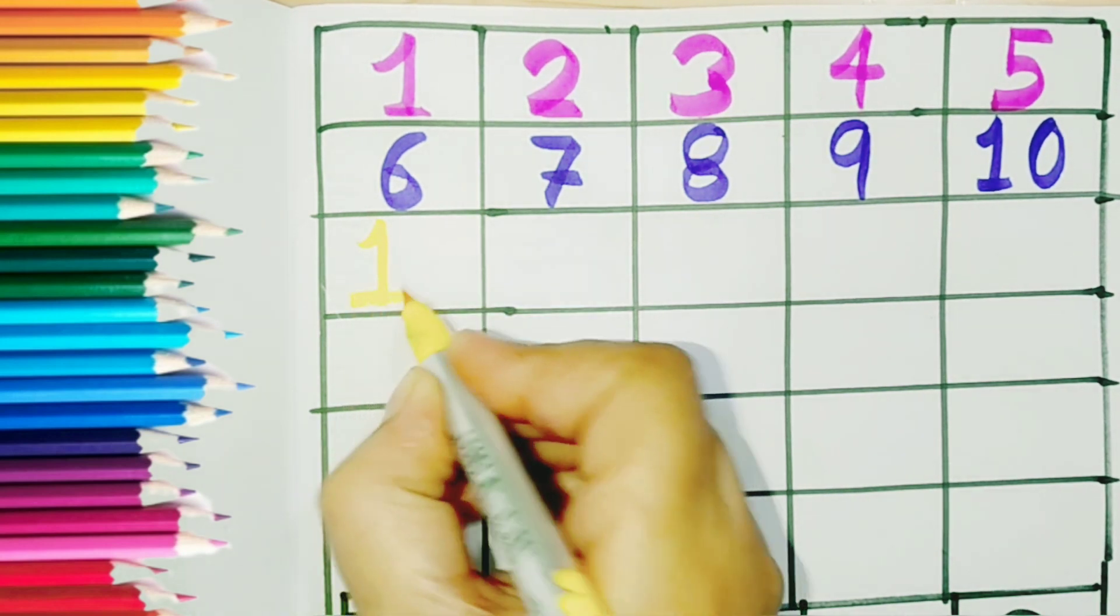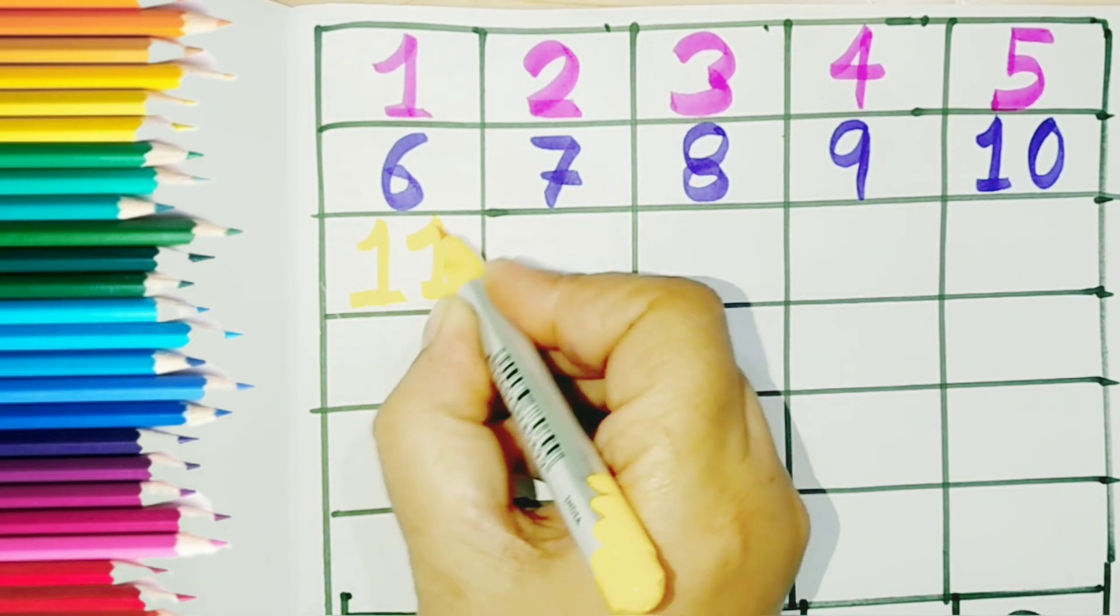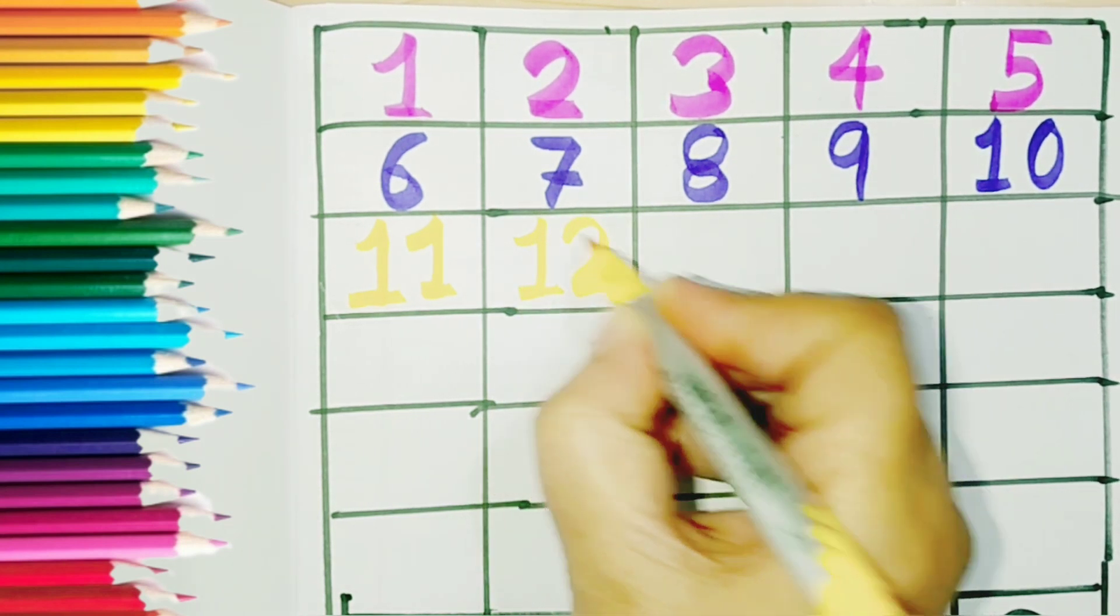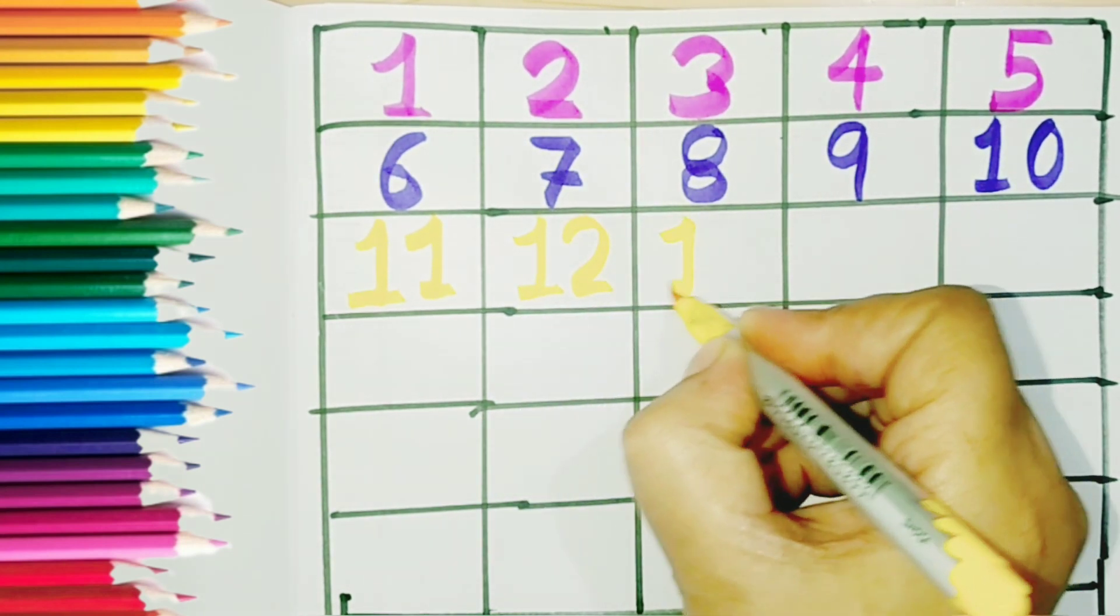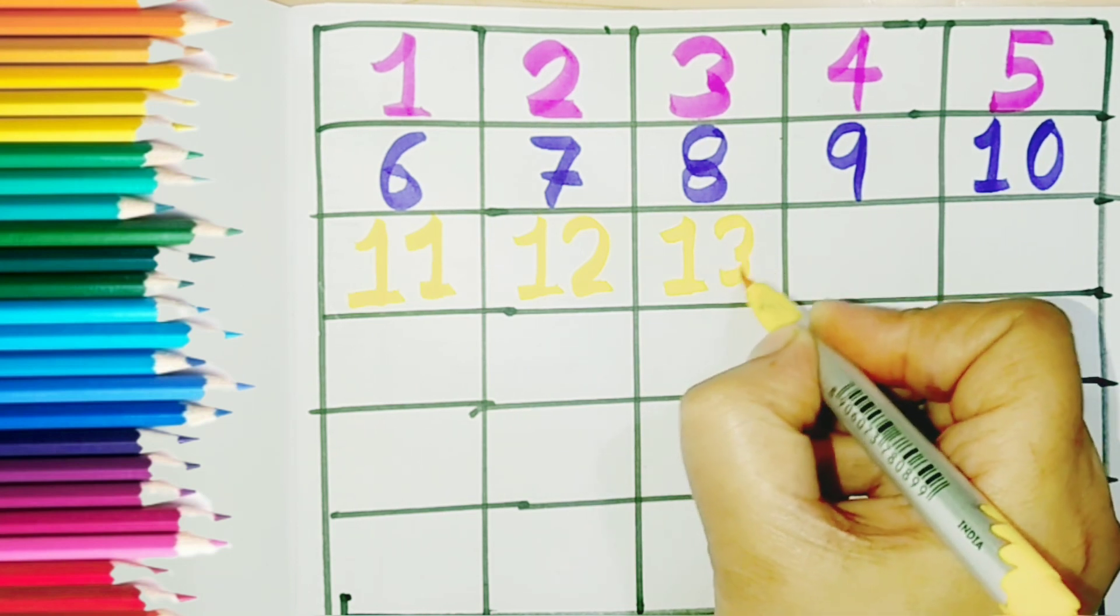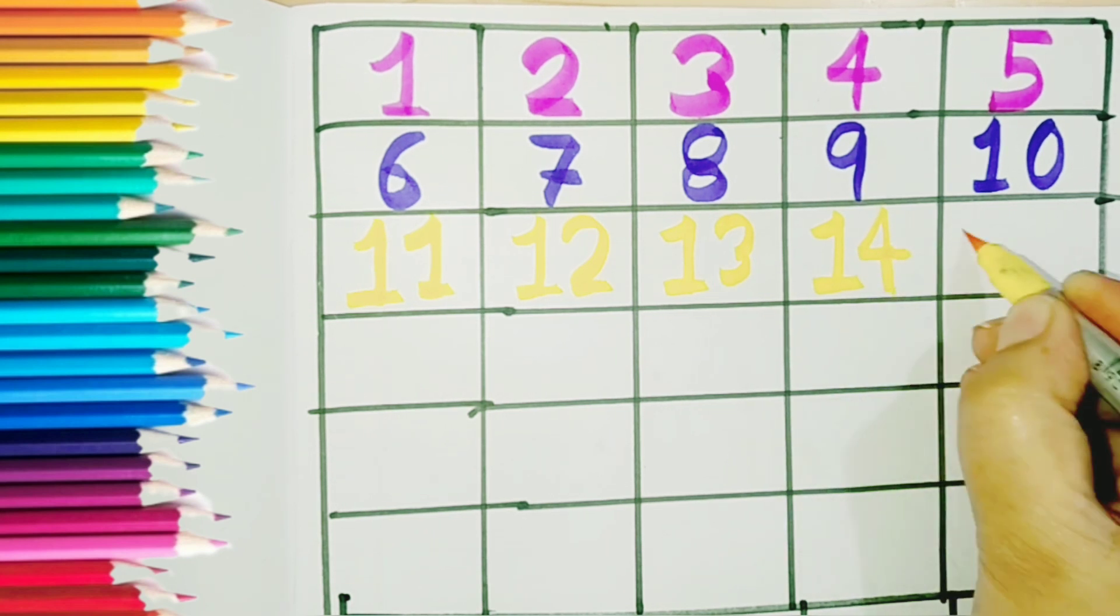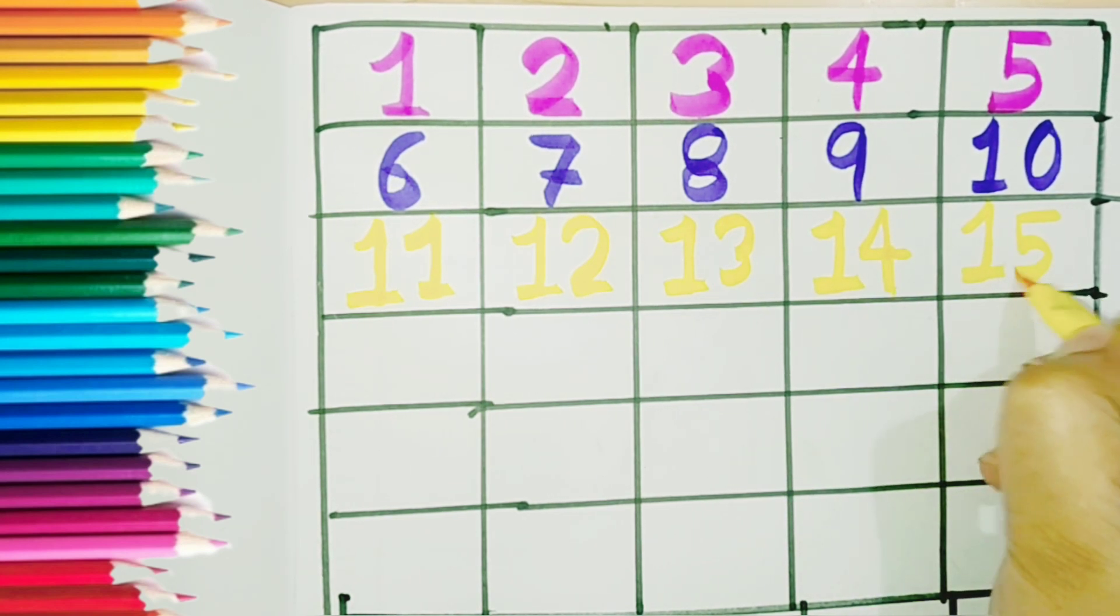One one, eleven. One two, twelve. One three, thirteen. One four, fourteen. One five, fifteen.